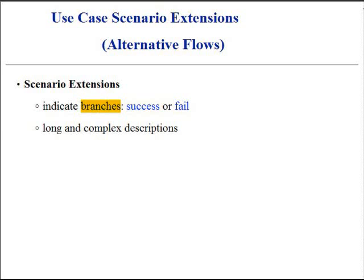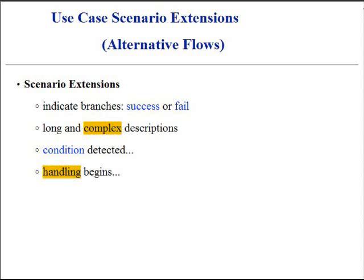An extension has two parts: the condition and the handling. The guideline is to write the condition as something that can be detected by a process or one of the actors in the system. Sometimes a particular extension can become quite complex. This can serve as motivation to express the extension as a separate use case.